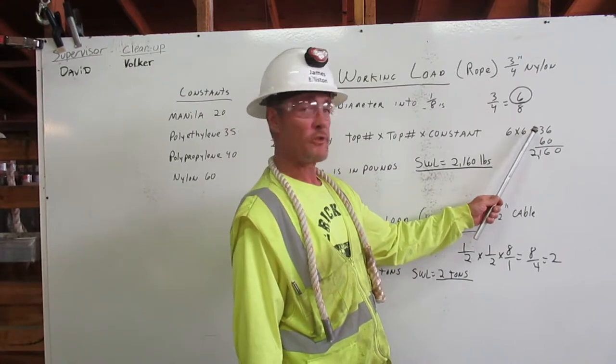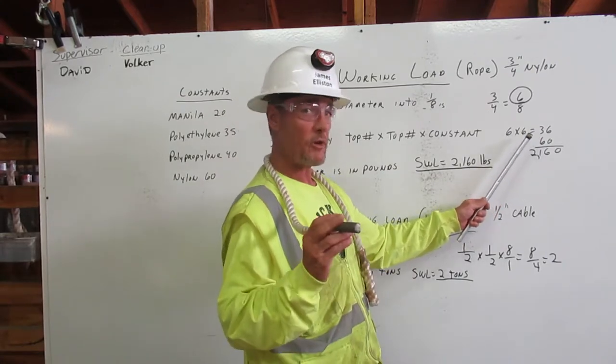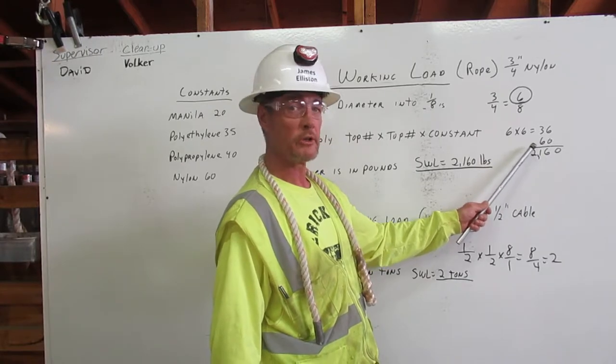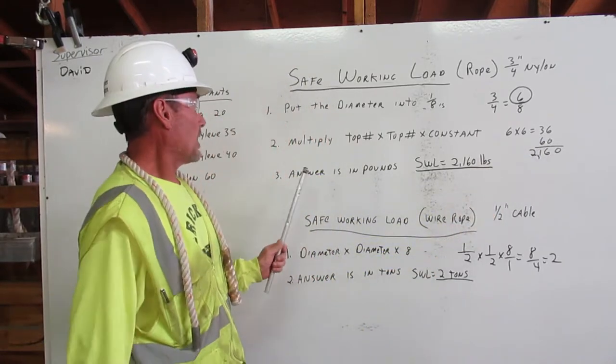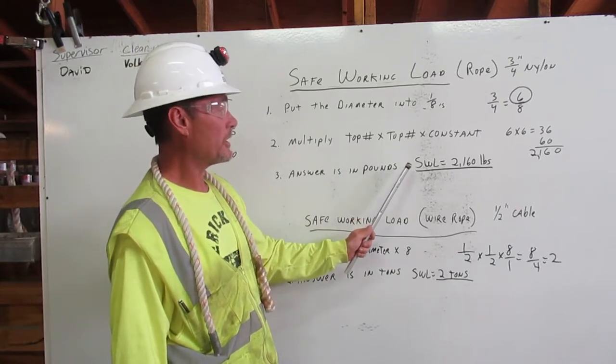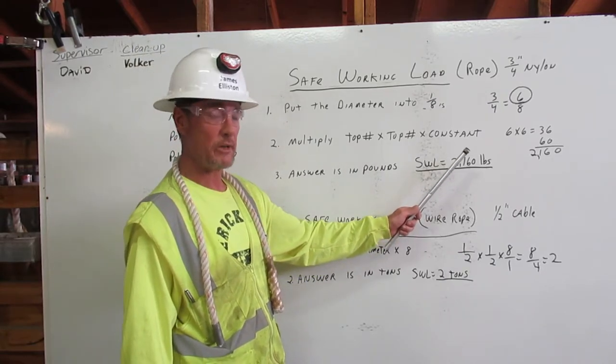So six times six is thirty-six, times sixty for our constant on three-quarter inch nylon, equals two thousand one hundred and sixty. Our answer is in pounds for rope, so the safe working load equals two thousand one hundred and sixty pounds.